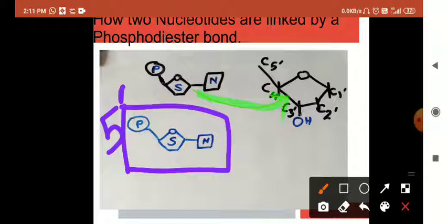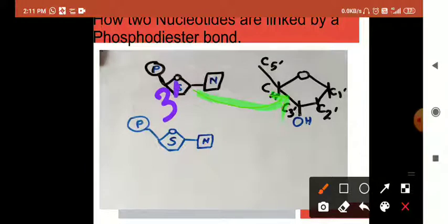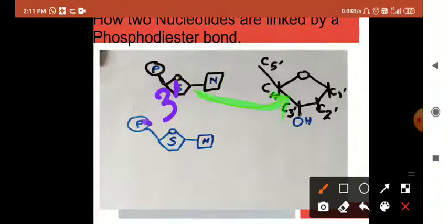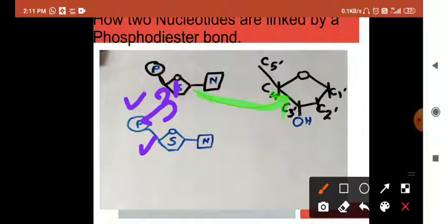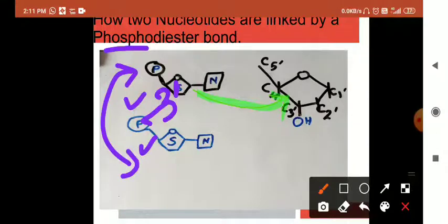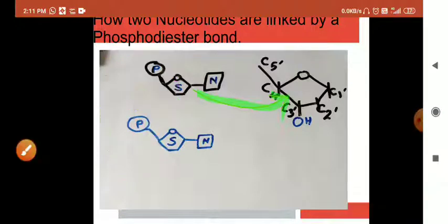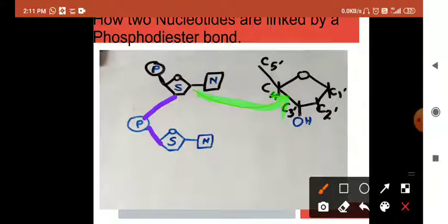We can also add the 5' phosphate. So there will be phosphodiester bond. So, the two nucleotides are connected to phosphodiester bond. The nucleotides are connected by phosphodiester bond. This will also be a phosphodiester bond.